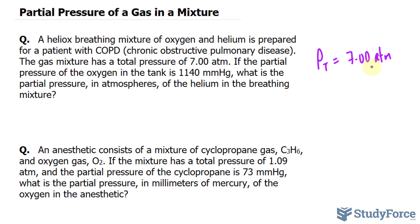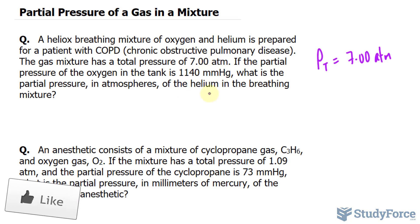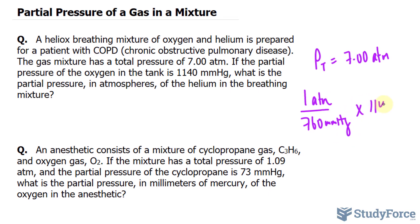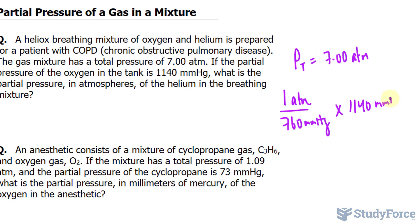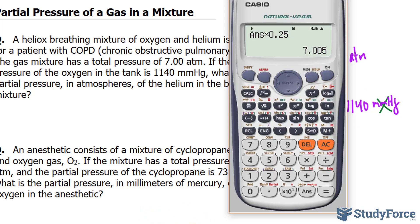The difficulty in this question is that the units are mismatched, so you'll have to convert mmHg to atmospheres. The conversion ratio is: 1 atmosphere is equivalent to 760 mmHg. So if I multiply 1,140 by this conversion ratio, the units will cancel out, giving us atmospheres. Let's go ahead and calculate that first.